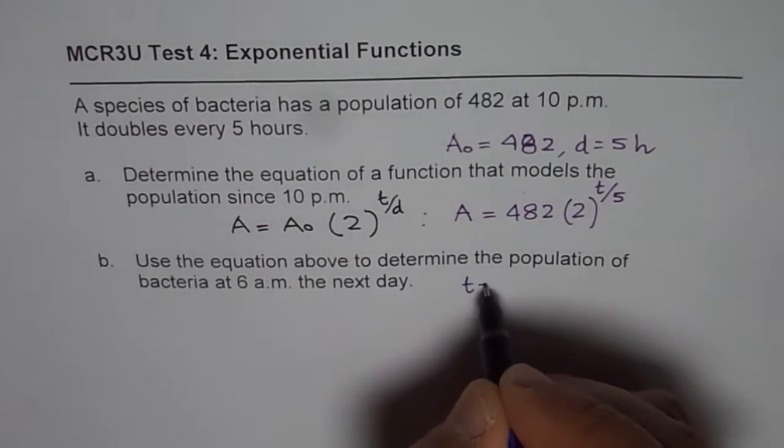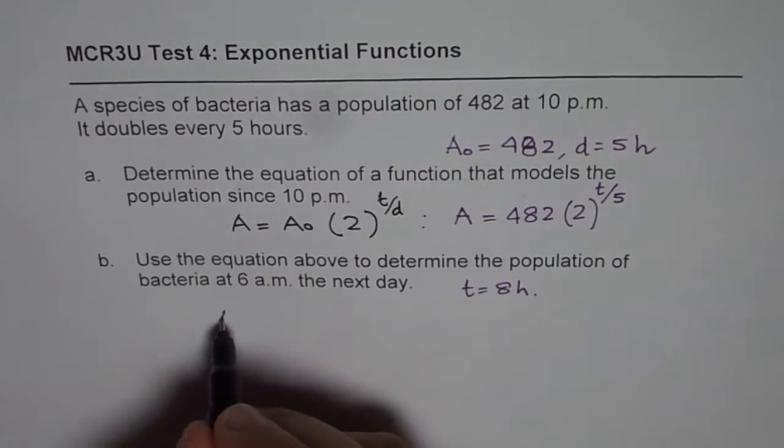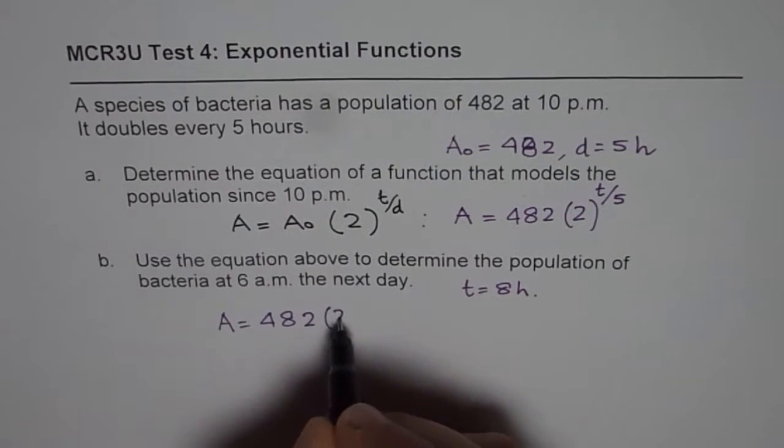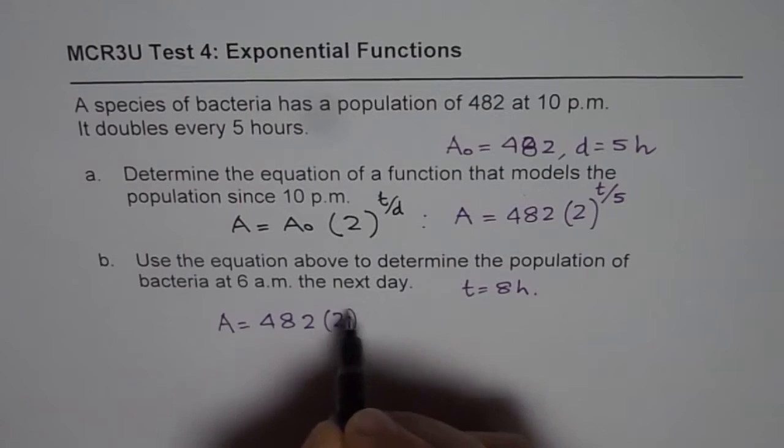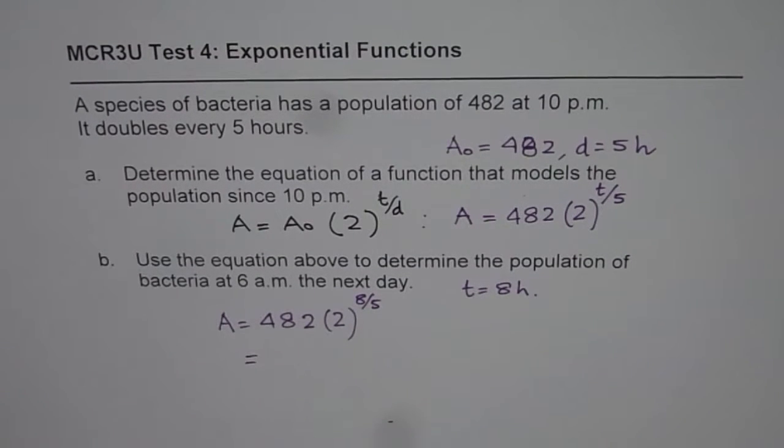So at this stage we have T equals to 8 hours. So we will substitute T equals 8 here, so we have A equals to 482 times 2 to the power of 8 over 5. And we can use the calculator to find the answer.